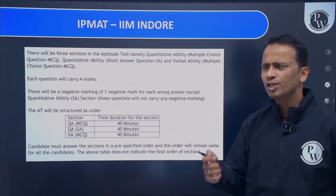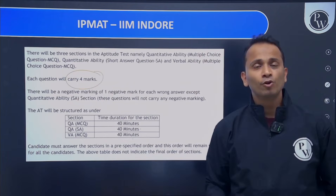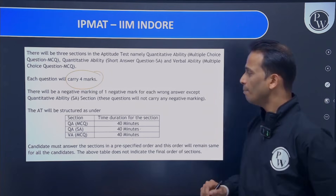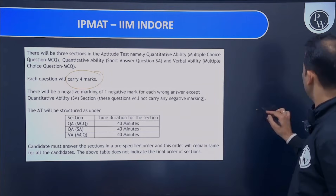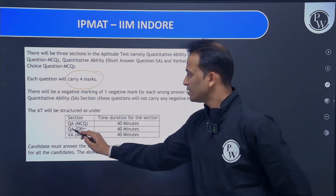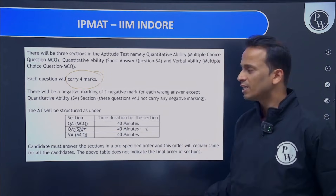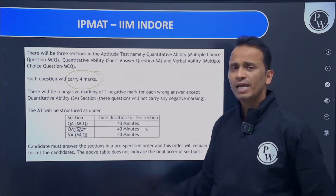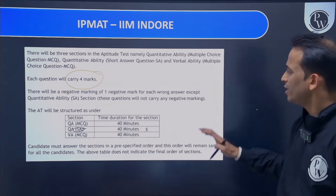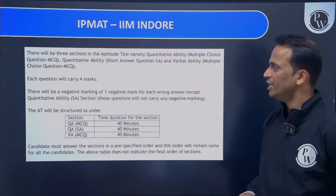Every correct answer gets four marks. There is negative marking, but not for subjective questions — that's the second section. MCQ questions have a negative marking of minus one. So this is the pattern of the examination.